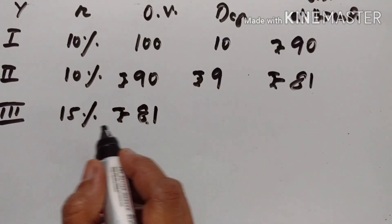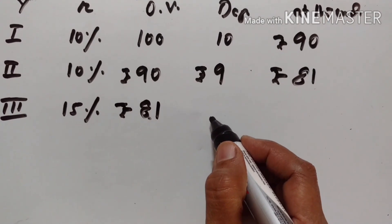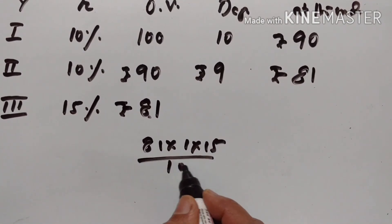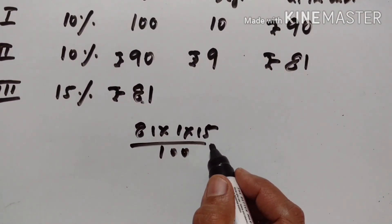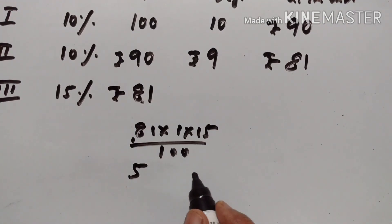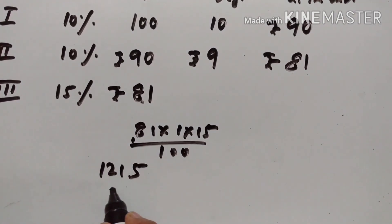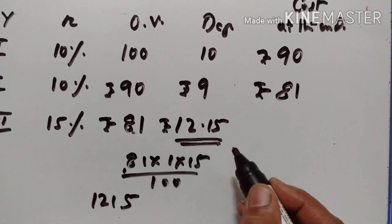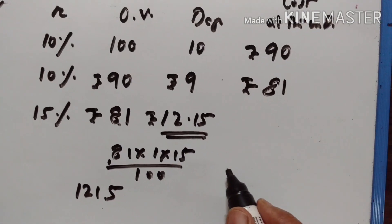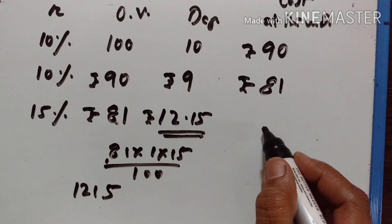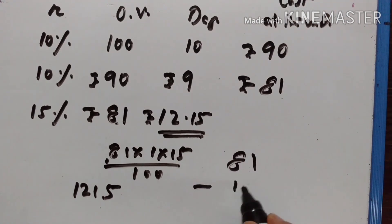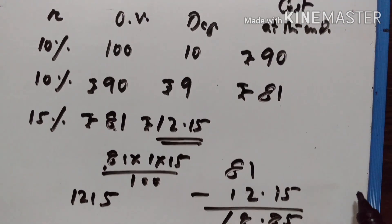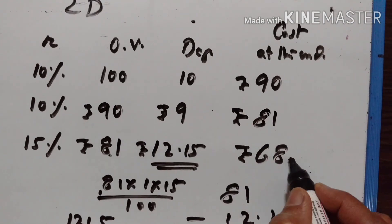This becomes the value at the beginning of the third year. There is a 15% decrease. 15% of 81 is equal to Rs. 12.15. This is the depreciation during the third year. The cost at the end of the third year is equal to Rs. 81 minus Rs. 12.15, which is Rs. 68.85.